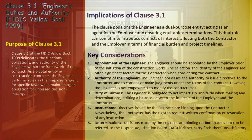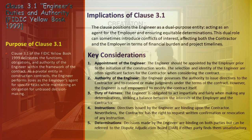Clause 3.1 - Engineer's Duties and Authority, FIDIC Yellow Book 1999. Clause 3.1 is fundamental in defining the engineer's role within the construction contract. As the employer's agent for certain tasks, the engineer must navigate a complex landscape of responsibilities while upholding an impartial stance in decision-making. The dual role of the engineer, acting both as an agent for the employer and an impartial decision-maker, can lead to potential conflicts of interest, influencing project timelines and financial aspects.